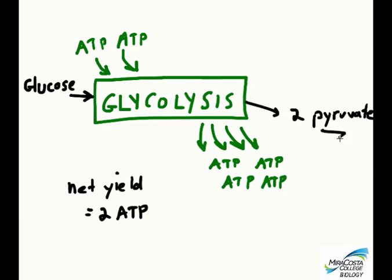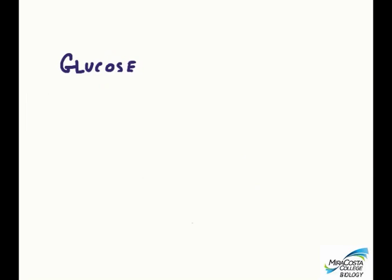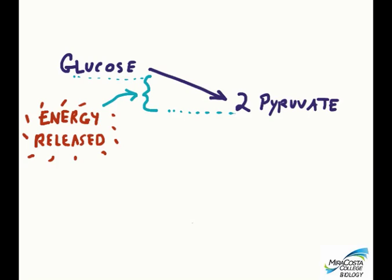If you ever see the word pyruvate written, this is really the same thing as pyruvic acid. These pyruvates, or pyruvic acids, represent less potential energy compared to the glucose we started out with. In the diagram, the level of the words I'm writing is meant to represent the amount of potential energy they contain. The energy differential between the starting glucose and the ending pyruvic acids will have been released over the course of the ten steps of glycolysis.